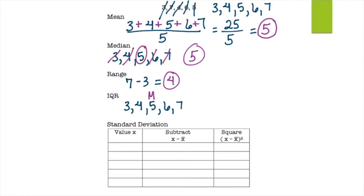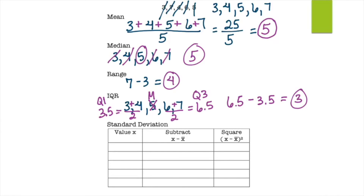For the IQR, list from least to greatest, identify and cross out the median (5). On the left side we have 3 and 4 — two numbers, so find their average: 3 plus 4 is 7, divided by 2 is 3.5 (quartile 1). On the right side we have 6 and 7 — find their average: 6 plus 7 is 13, divided by 2 is 6.5 (quartile 3). IQR = quartile 3 minus quartile 1: 6.5 minus 3.5 equals 3.